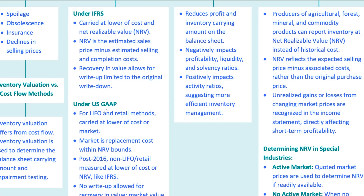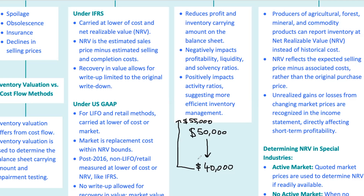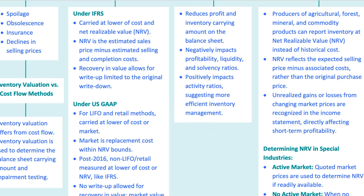For example, if you're using LIFO and your inventory is originally valued at $50,000, then the market value drops and you write it down to $40,000 — even if the market recovers and the value goes back up to $55,000, under US GAAP you're stuck with that $40,000 as the new cost basis. No going back up. These differences might seem small, but they can lead to significantly different financial outcomes, especially when comparing companies that report under different standards.